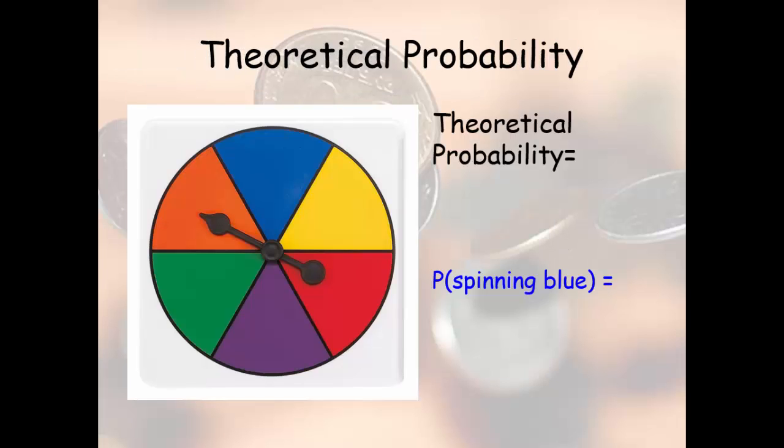Theoretical probability doesn't have any data. We're going to look at the situation and analyze it. In this situation, we're looking at what appears to be a fair spinner because all the sections are the same size, and there's one section that's blue. So the probability of spinning blue in this case is one out of six possibilities. That's theoretical probability. It's based on the situation.